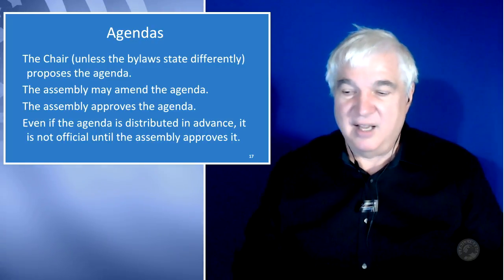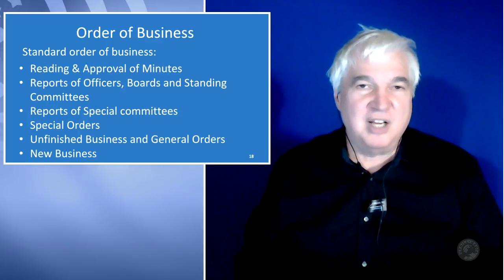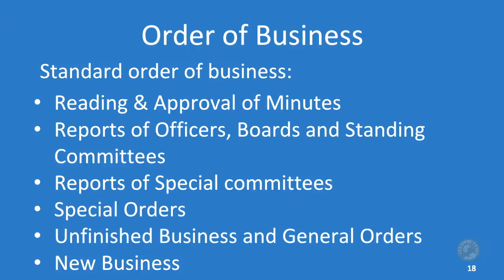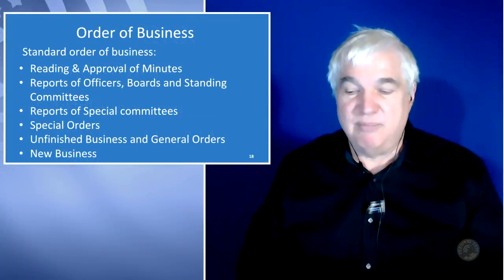On the next slide is the order of business. This is not an agenda, but this is the order of business in which organizations should run their meetings when they have not specified an order of business in their bylaws. The first item is the reading and approval of the minutes, which is important because this is the record of what had gone on in the past. After the reading and approval of the minutes, you get the reports of officers, boards, and standing committees.